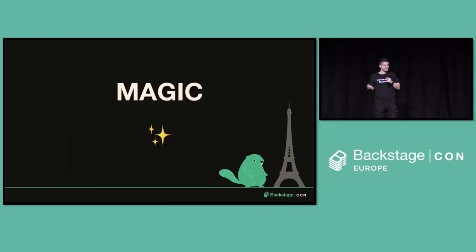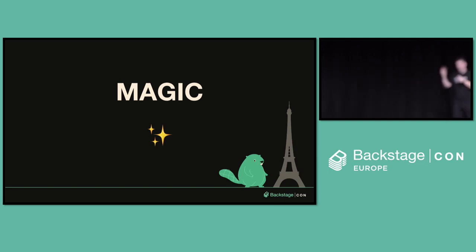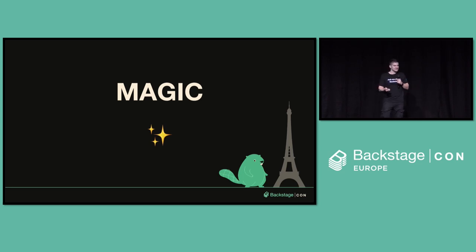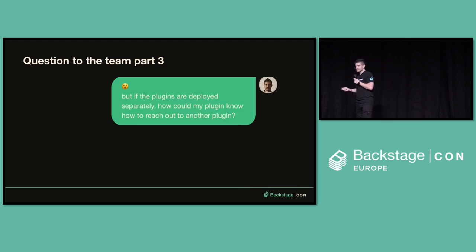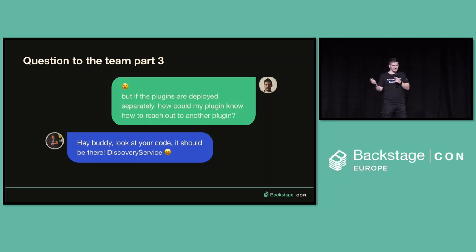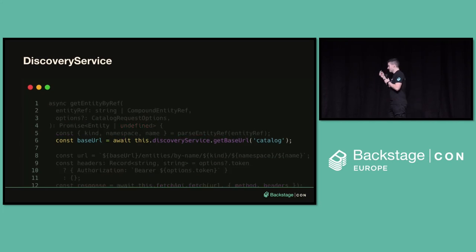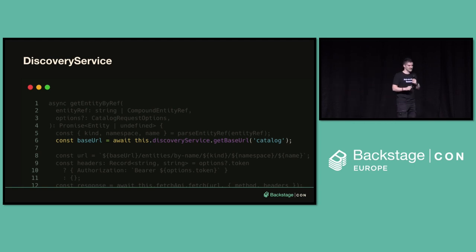I found this mind-blowing — this was the missing piece I had missed about Backstage. You can deploy the plugin separately, and Backstage knows exactly how to reach out to the plugin. But still, how does it work? Backstage is very versatile — you can deploy on Kubernetes, on a Raspberry Pi, or on a virtual machine. How could Backstage know where the plugin is deployed? I reached out to the team, and Ben jumped into the discussion and said: look at your code, it's right there — Discovery Service. You pass a plugin ID to Discovery Service, and Discovery Service gives you exactly the address of that plugin. That's where the magic was.